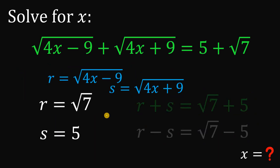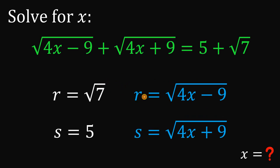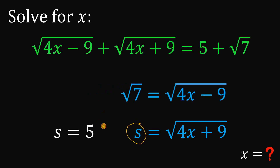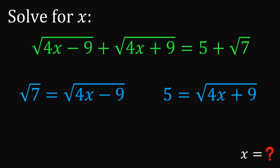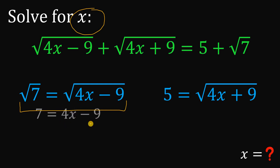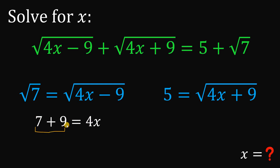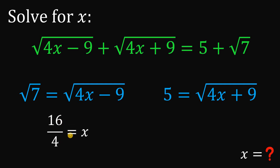Using these values, let's solve for x. From the first equation, r equals square root of 4x minus 9, we substitute r with square root of 7. So square root of 7 equals square root of 4x minus 9, which means 7 equals 4x minus 9. Adding 9 to both sides gives 16, and dividing both sides by 4 gives x equals 4.